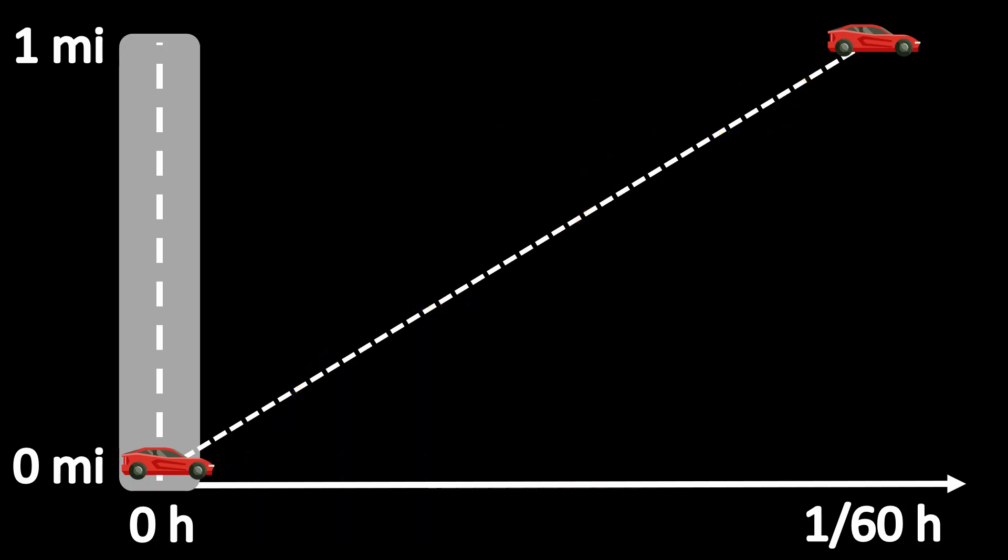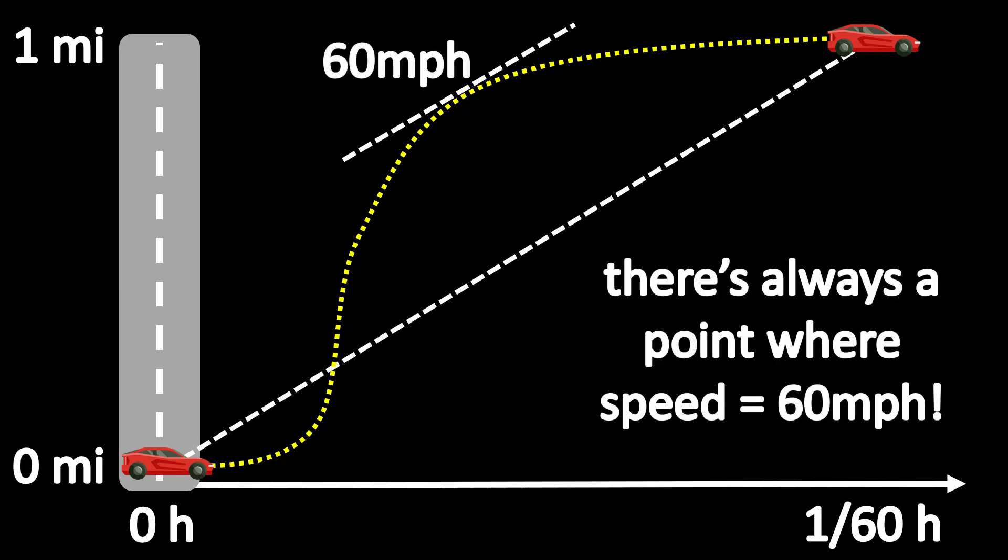It turns out that no matter how we draw this path between point A and point B, there will always be at least one point on this path where your speed is exactly the average speed of 60 miles per hour. And so the cop will always be justified in giving you a speeding ticket despite never actually catching you speeding.